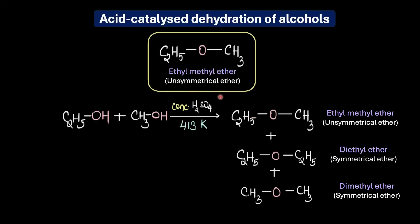The most efficient way to prepare an unsymmetrical ether is via the Williamson ether synthesis, about which you will learn in the next video.